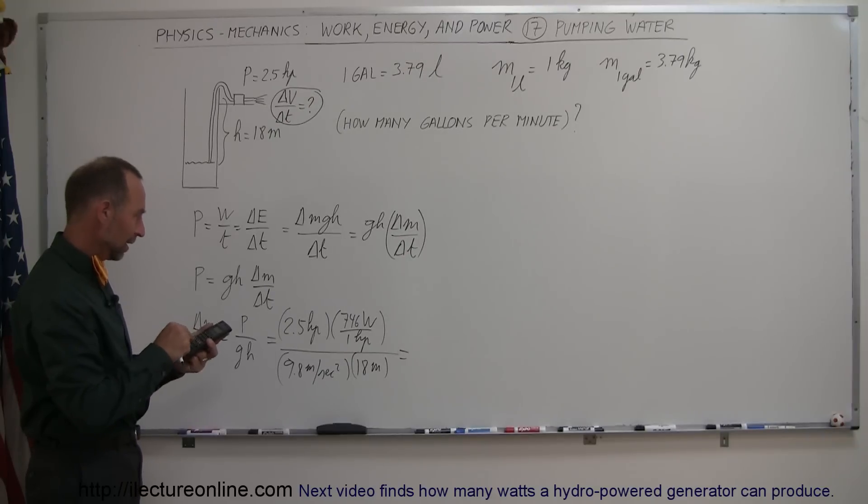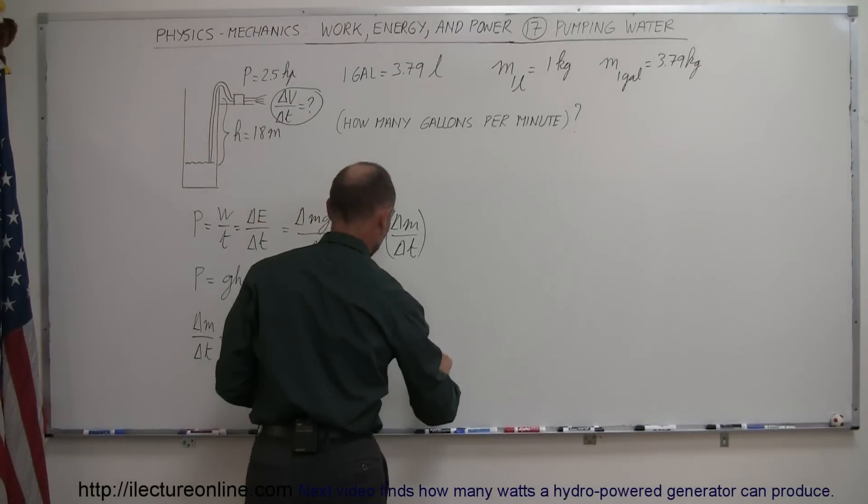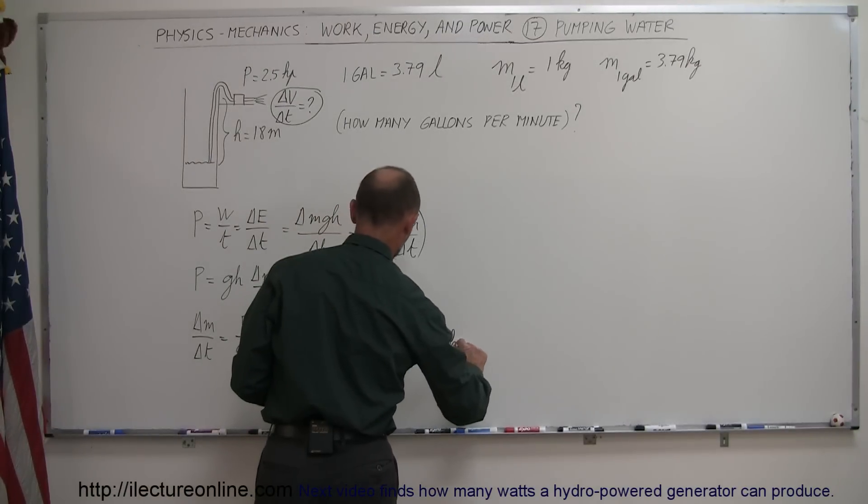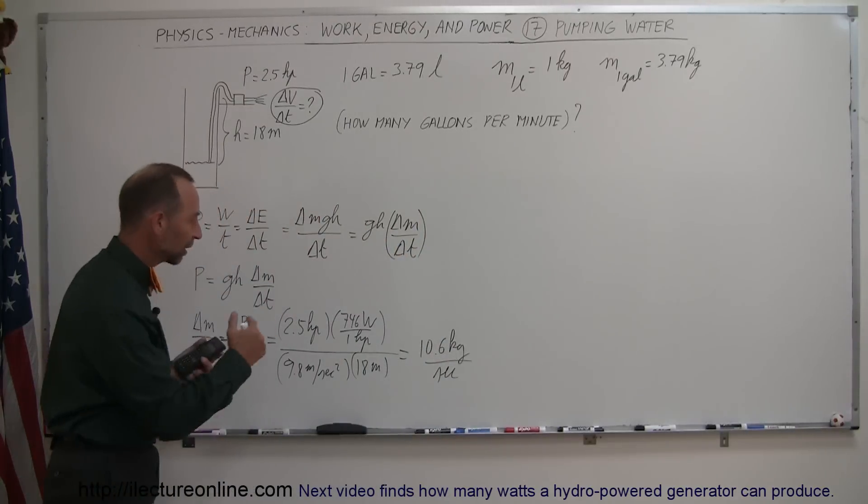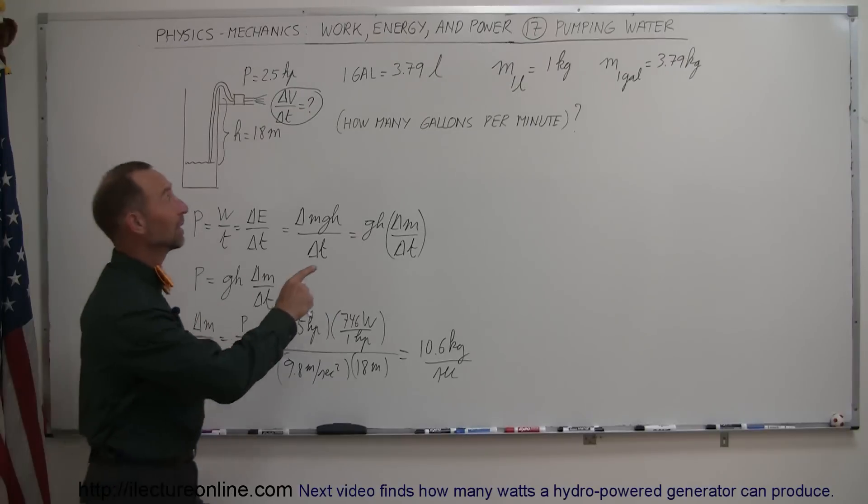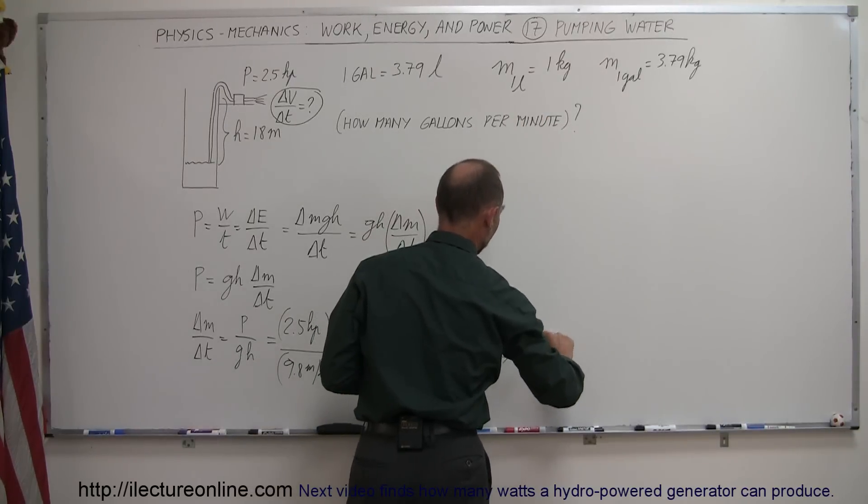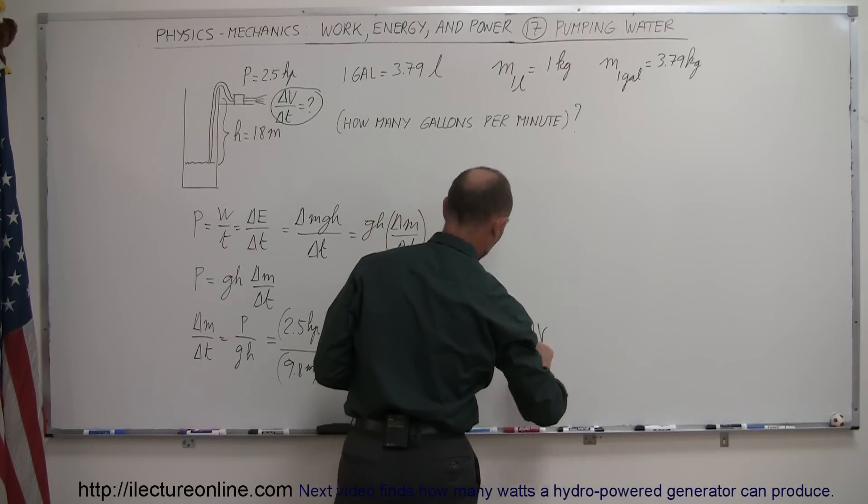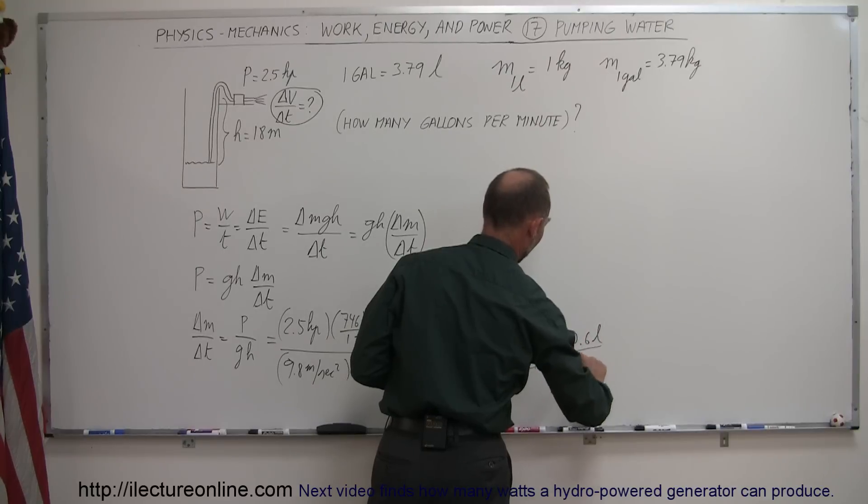So 2.5 times 746 divided by 9.8 and divided by 18 equals 10.6 kilograms, 10.6 kilograms per second. Because the units will be mass over time or kilograms per second. So 10.6 kilograms per second means, since 1 kilogram is 1 liter of water, that means that the delta V delta T, because it's a 1 to 1 correspondence, is therefore equal to 10.6 liters per second.